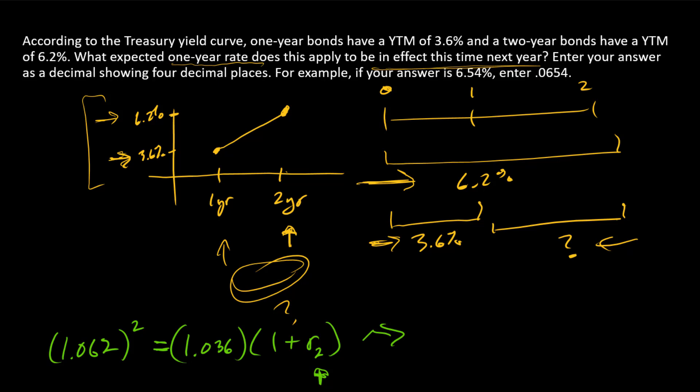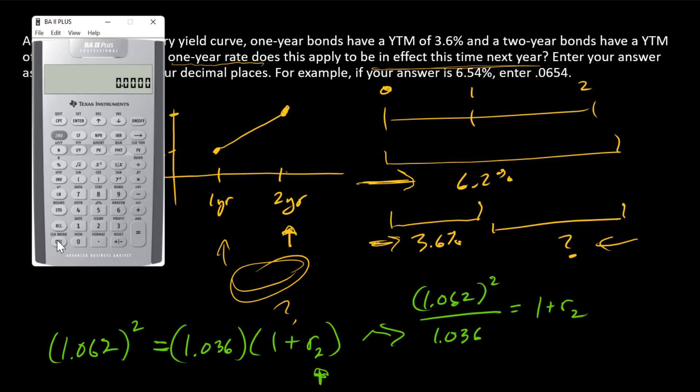How are we going to solve for R2? Let's isolate the variable: (1.062)^2 divided by 1.036. That equals 1.062 squared, there's the numerator, and divide that by 1.036.